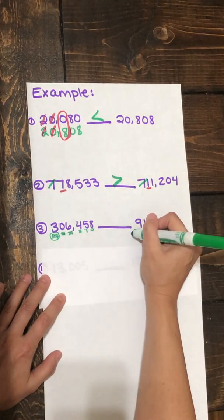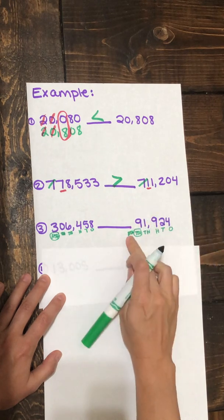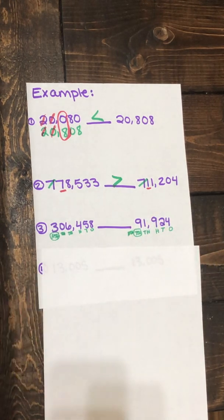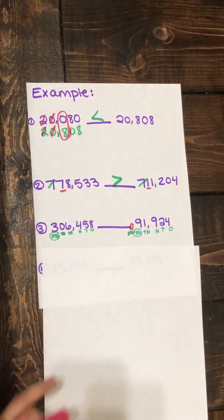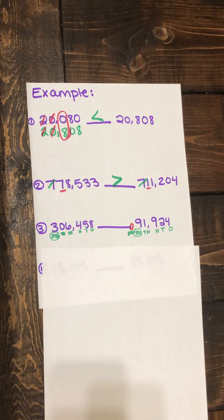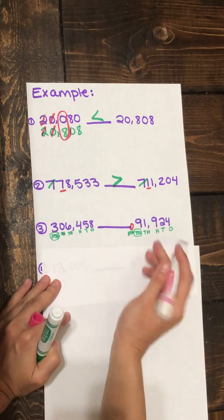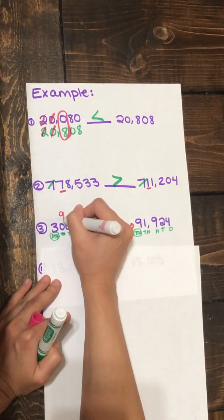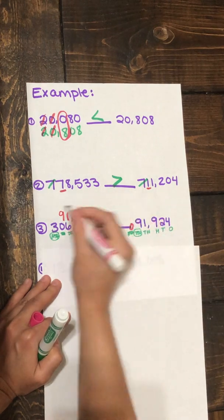Since we do not have a digit in the hundred thousands place, what can we put to fill this space? We could put a zero. That way, when you're comparing numbers, you have an even, you have the same amount of digits in each number. If we were to write this one underneath, it would look like this. I'll put this one on top here. 91,924.